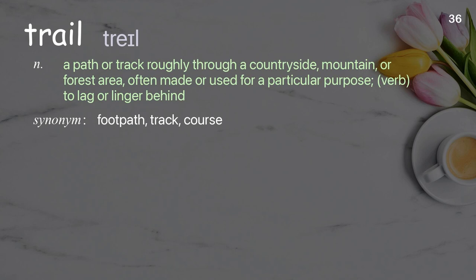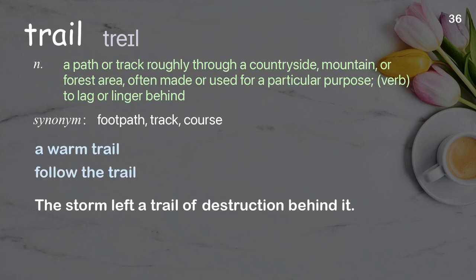Trail: A path or track roughly through a countryside, mountain, or forest area, often made or used for a particular purpose. Verb: To lag or linger behind. Examples: A warm trail, Follow the trail. The storm left a trail of destruction behind it.